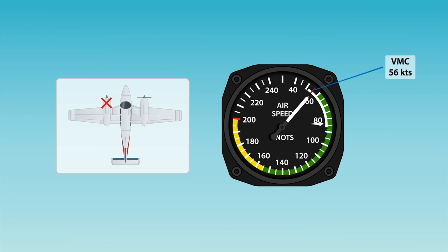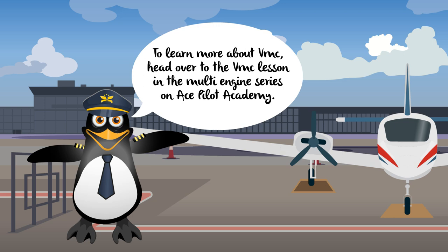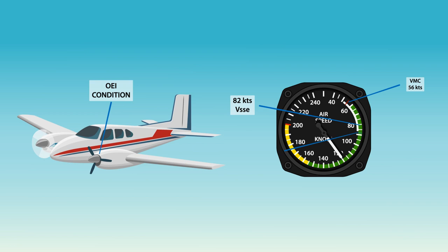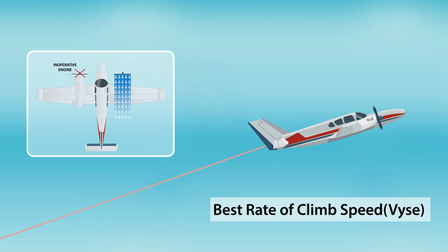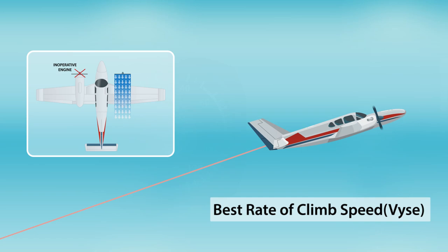To learn more about VMC, head over to the VMC lesson in the multi-engine series on ACE Pilot Academy. Let us review. Multi-engine aircraft have four additional V-speeds for OEI conditions: VXSE is the best angle of climb speed with one engine inoperative; VYSE is the best rate of climb speed with one engine inoperative; VSSE is the safe single-engine speed; and VMC is the minimum control speed with the critical engine inoperative. Thanks for joining us at the ACE Pilot Academy. See you next time!